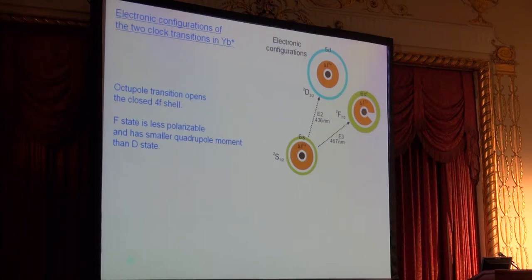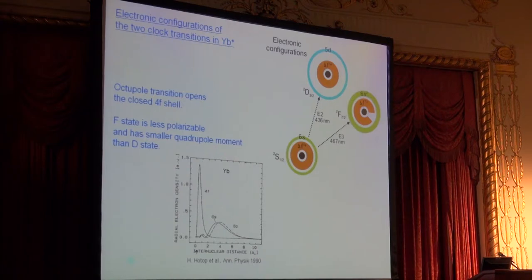This method works very effectively and has allowed us now to do a number of precision measurements characterizing this strongly forbidden transition. I need to briefly explain a little bit about the electron structure. Why is this octupole transition so favorable for a frequency standard? The ground state electron configuration of ytterbium plus is a 6s electron and a filled 4f shell. The quadrupole line excites the 6s electron to the 5d state, whereas the octupole transition opens the filled 4f shell, promoting a 4f electron to the 6s, filling the 6s shell. Looking at this picture, I think it becomes intuitively clear why this F state is much less polarizable and also has a smaller quadrupole moment than the D state. That's why it is advantageous in terms of systematic shifts. You can see the 4f holes are shielded or protected inside the 6s shell.